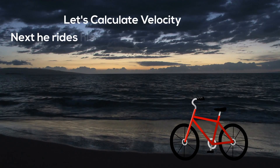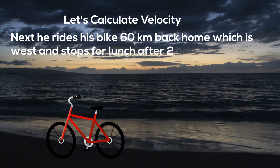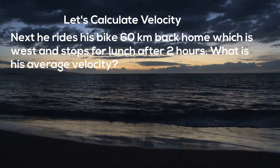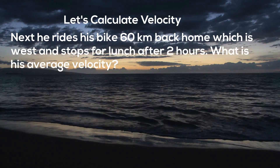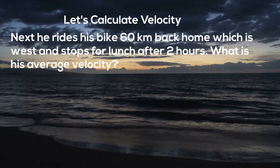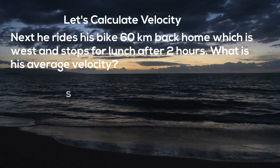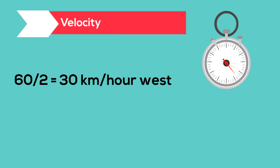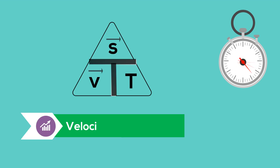Next, he rides his bike 60 kilometers back home, which is west, and stops for lunch after 2 hours. What is his average velocity? Remember, velocity is a measure of displacement, and it involves distance and direction. So velocity would equal 60 kilometers west divided by the change in time, which is 2 hours. So the average velocity equals 30 kilometers per hour west. I hope this introduction to average velocity helps.